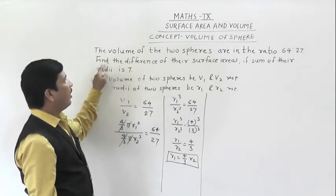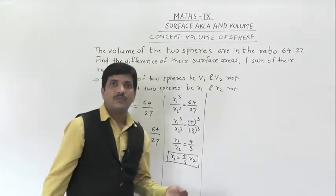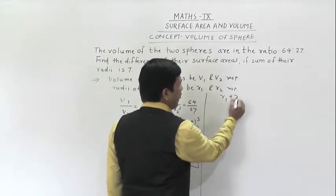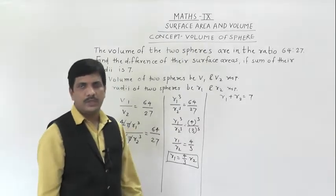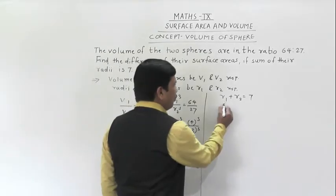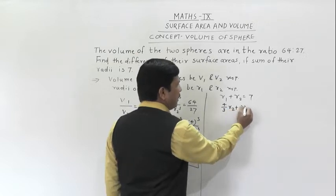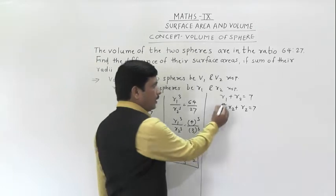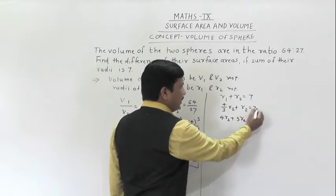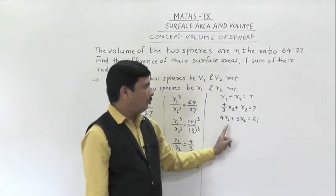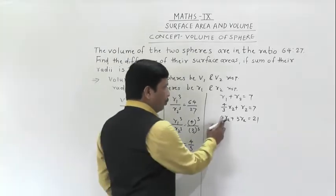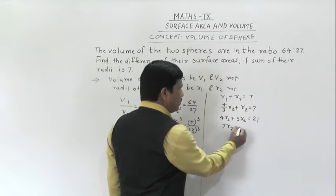We have to find the difference of their surface areas. It is given that the sum of their radii is 7, so R1 + R2 = 7. Substituting R1 = (4/3)R2: (4/3)R2 + R2 = 7, which gives 4R2 + 3R2 = 21, so 7R2 = 21.